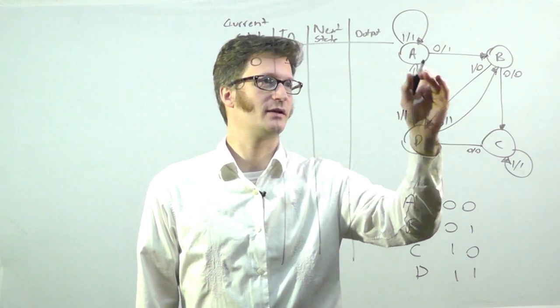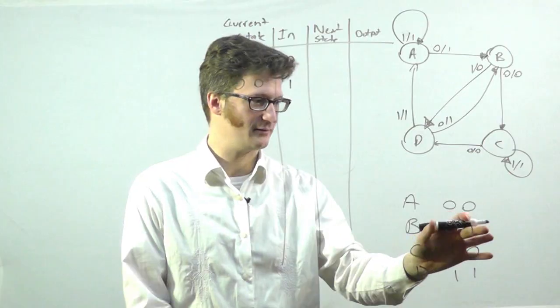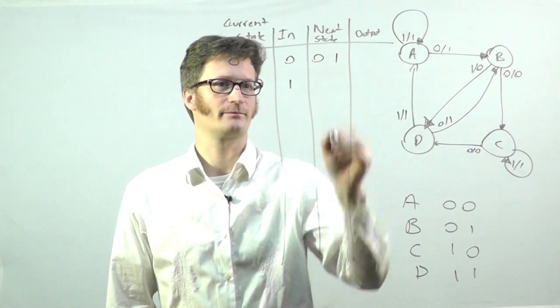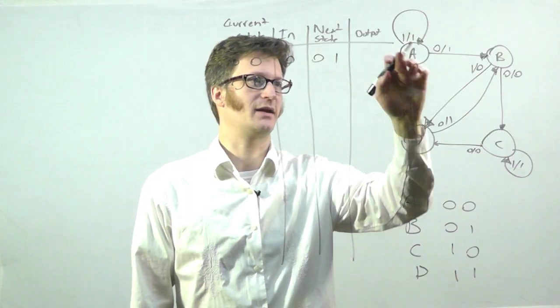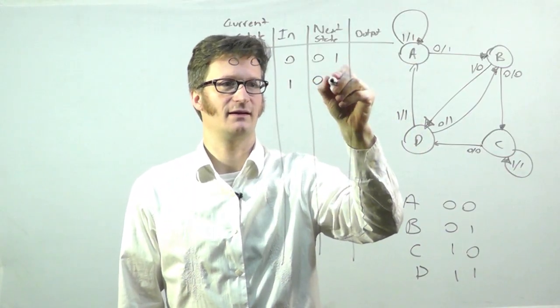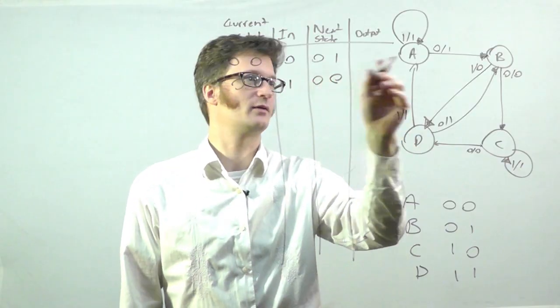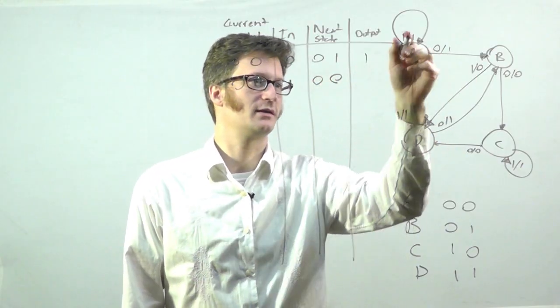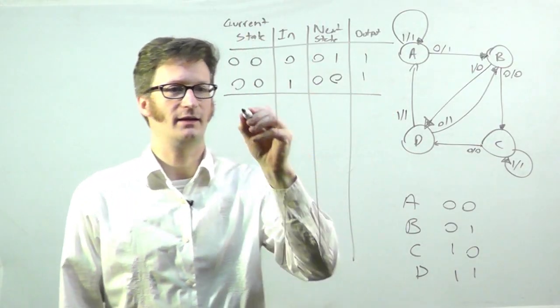So if my input for A is 0, then I go to state B. And state B, we can see, is 0, 1. And if I have, my current state is A and my input is 1, my next state is A. And if my input is 0, my output is 1 and 1.